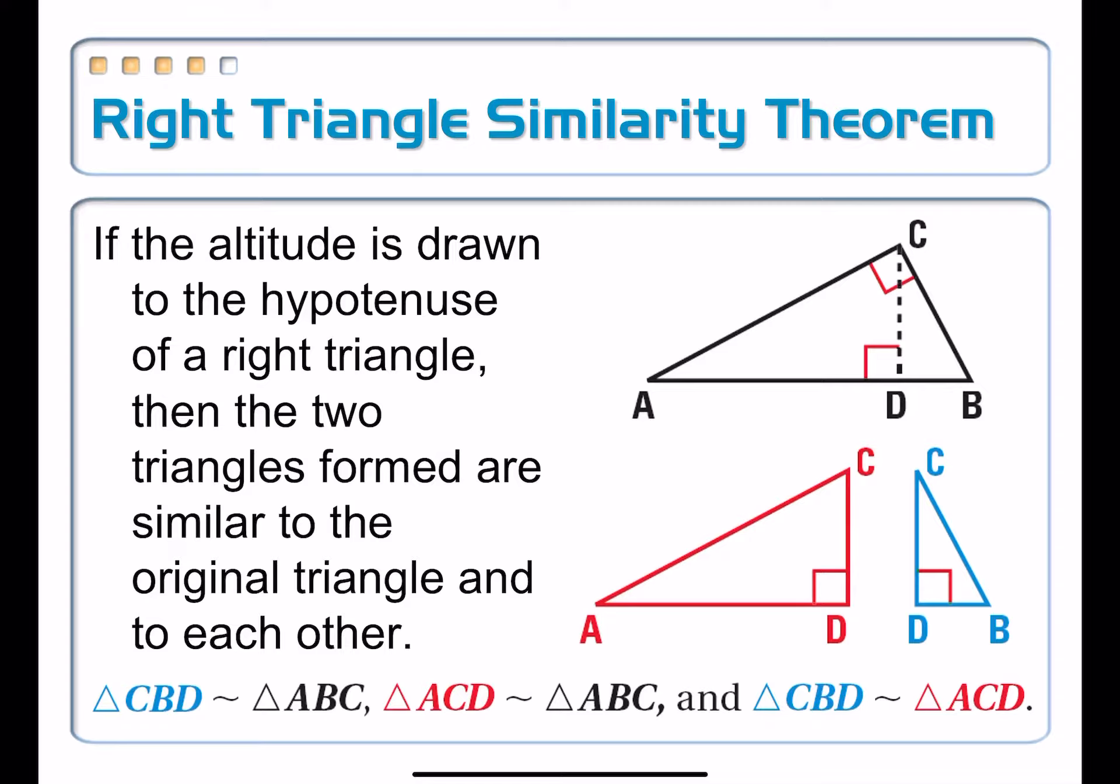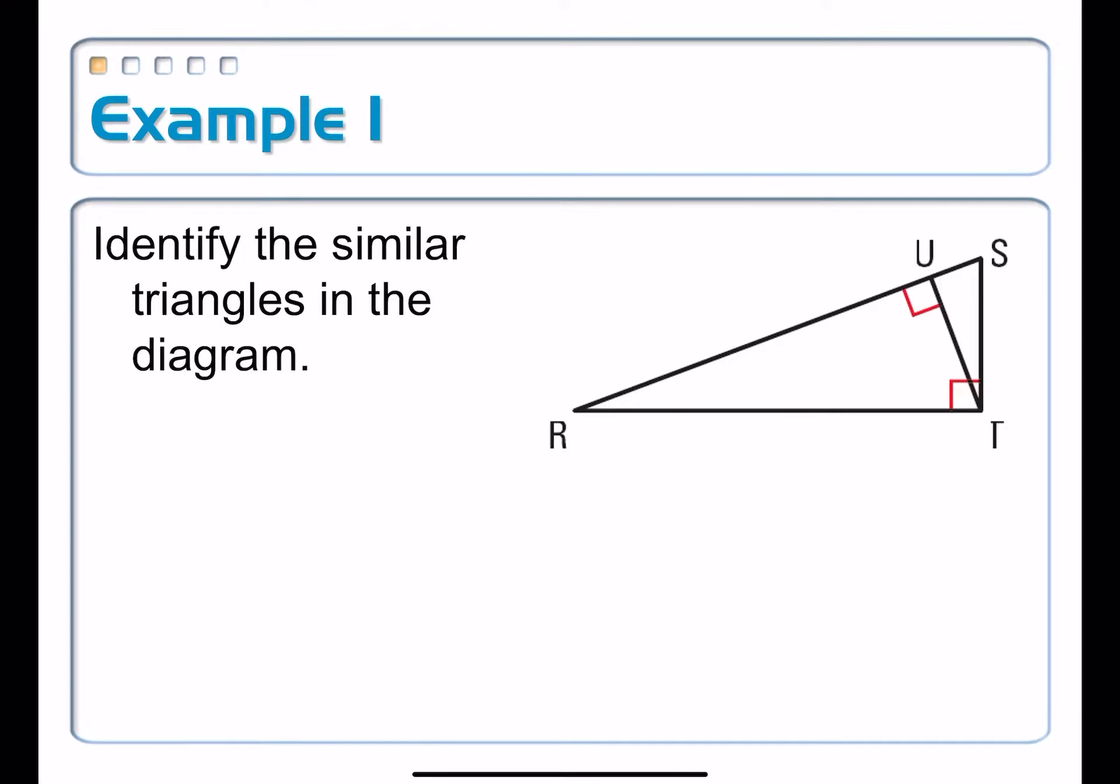So sometimes what we need to do is we have our right triangle with that extra altitude drawn in there to the hypotenuse, and we want to write a similarity statement that says here are all three triangles which are similar to each other.